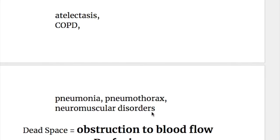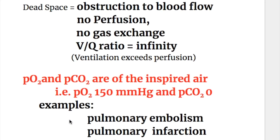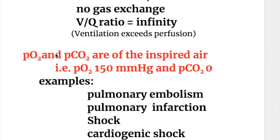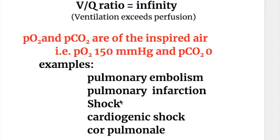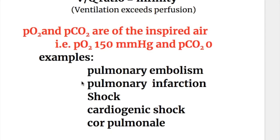In dead space, there is obstruction to blood flow, no perfusion, and no gas exchange, so V/Q ratio goes to infinity. PO2 and PCO2 in dead space are those of inspired air — that is, PO2 is 150 mmHg and PCO2 is zero. Examples include pulmonary embolism, pulmonary infarction, and cardiogenic shock.